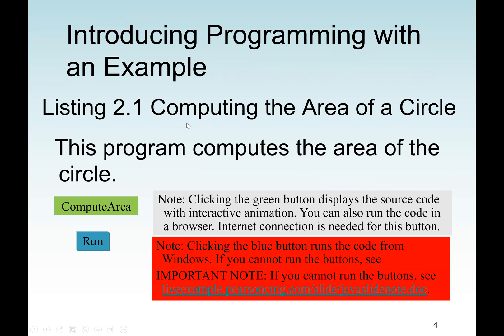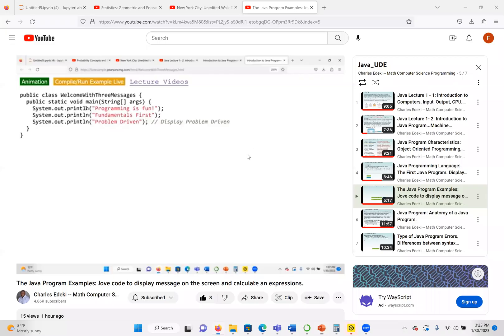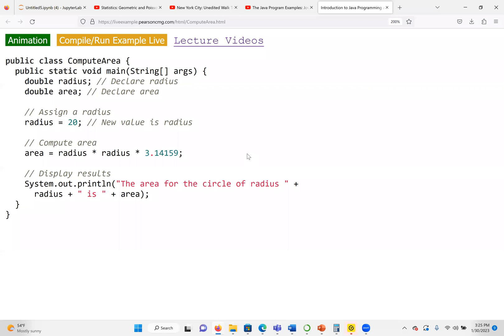We start with the first problem: computing the area of a circle. In mathematics, the area of a circle is pi times radius squared, where r is the radius and pi is the constant value 3.14159. We need an input of the radius — if we can get the radius, we can find the area. In this program, we are going to do input, process, and output in sequential order.